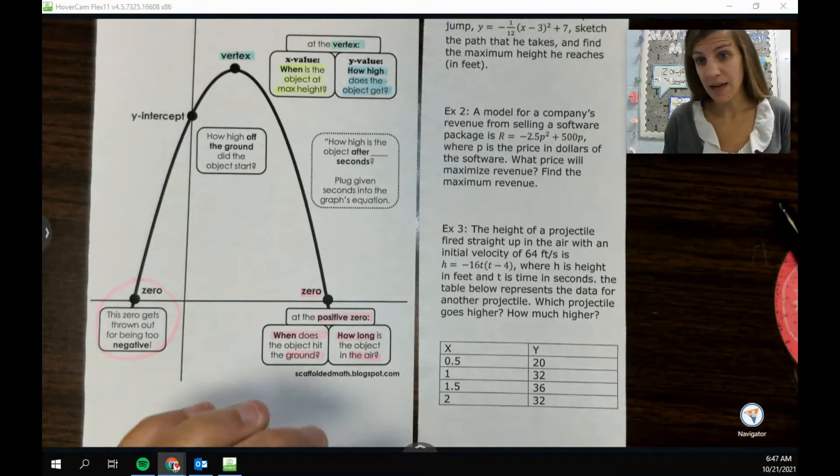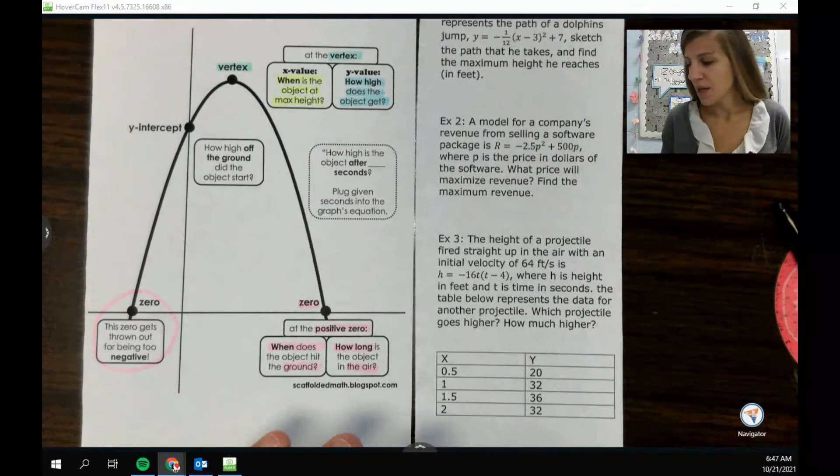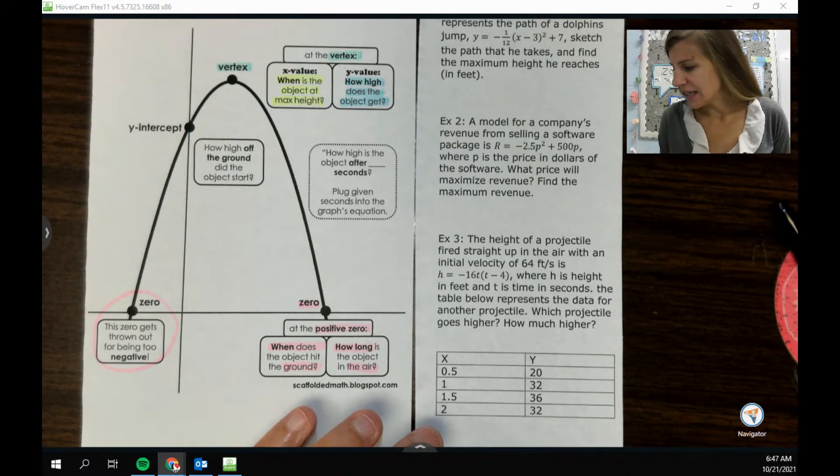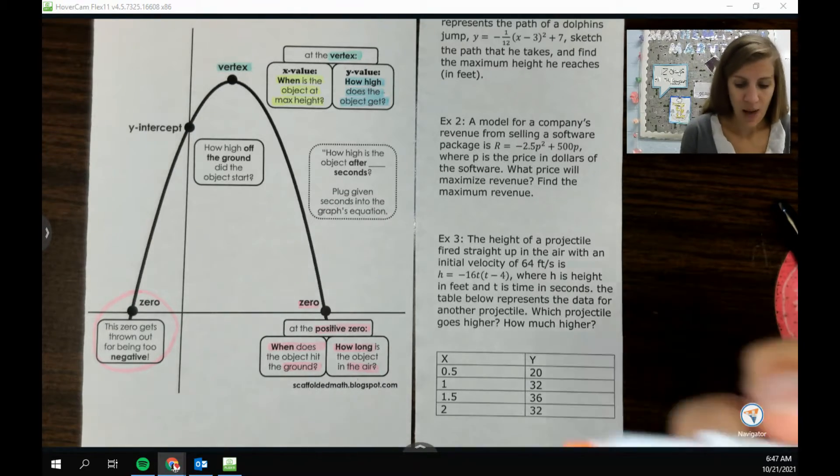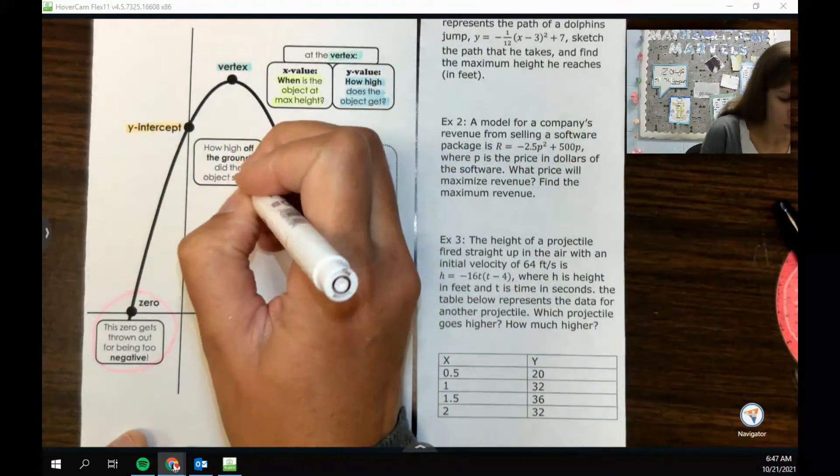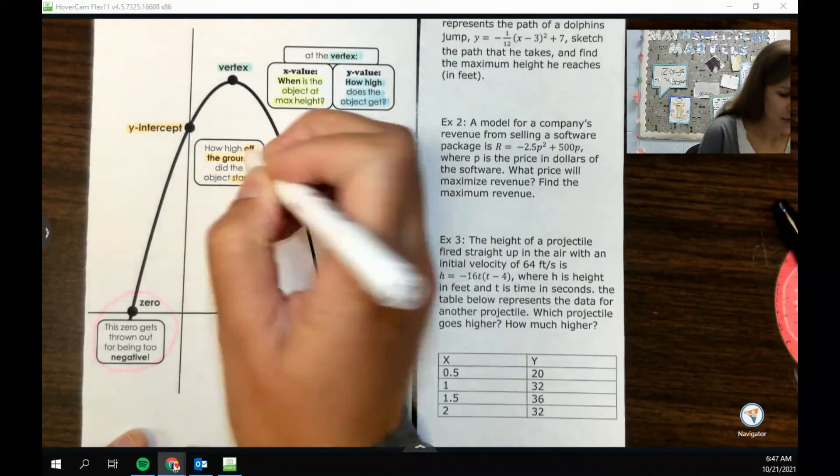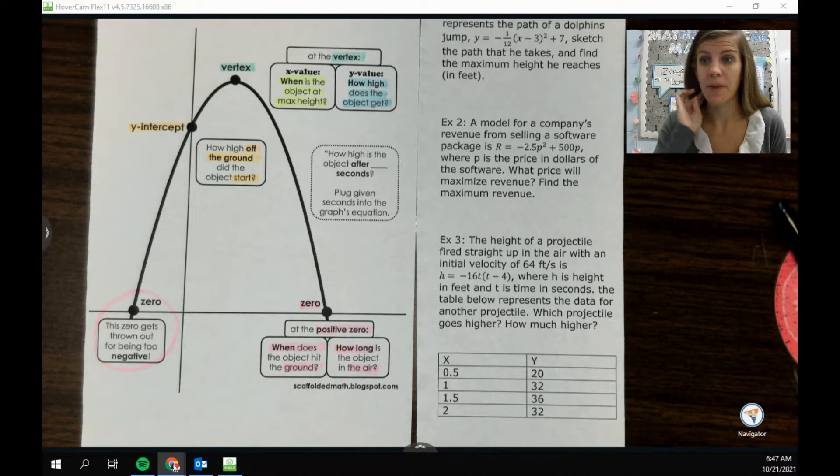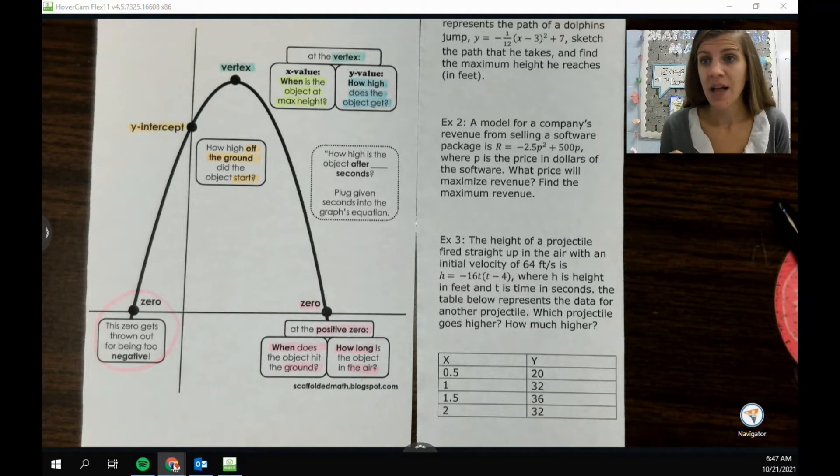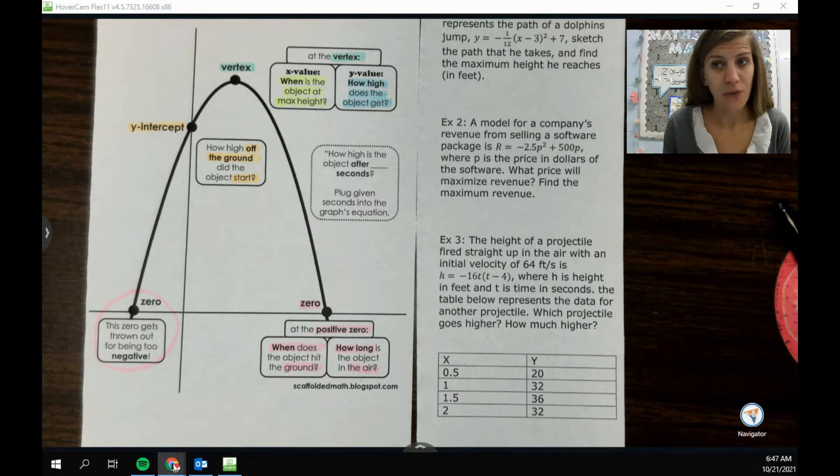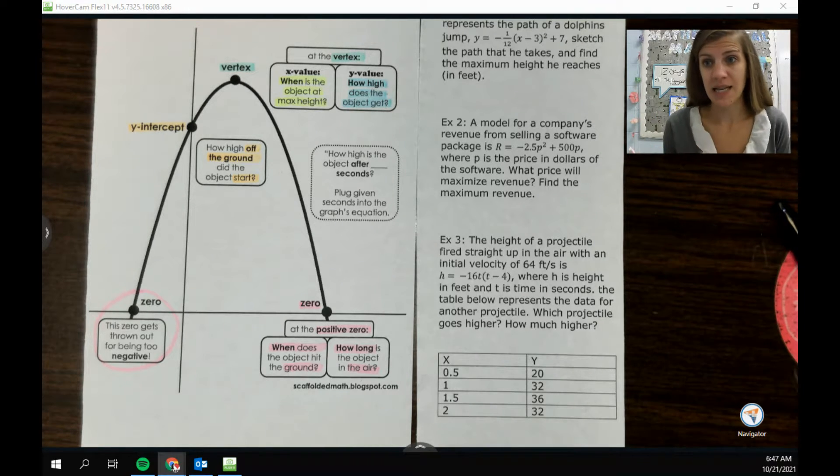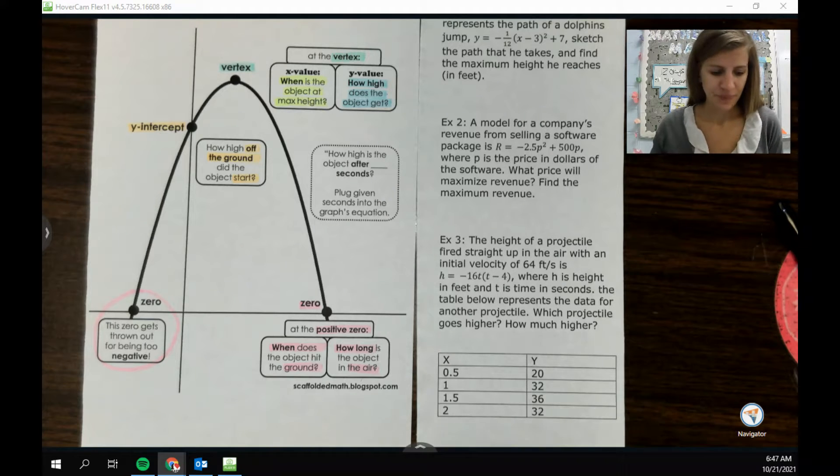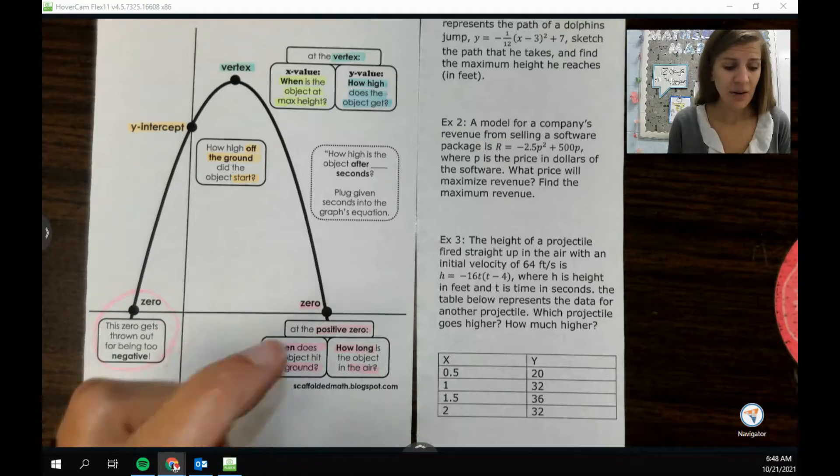The other key value that we often look at is the y-intercept. The y-intercept is kind of like when did we start, like how high was it off the ground when we started, like did it have a starting height. If you think about the football problem that we did, the y-intercept wasn't zero because the punter punts the football out of the air, so it was like a foot off the ground because that's how high he kicked it from.